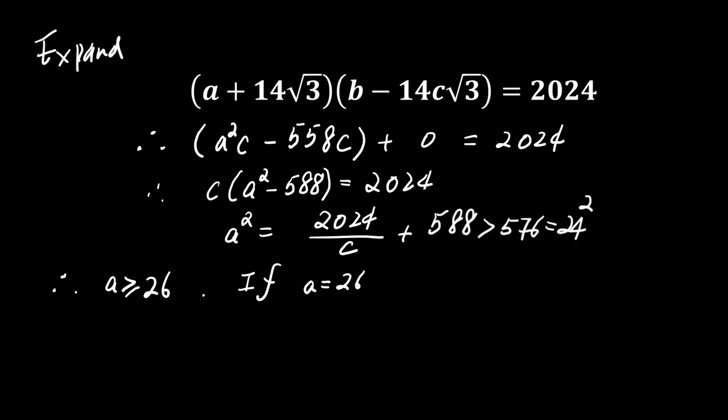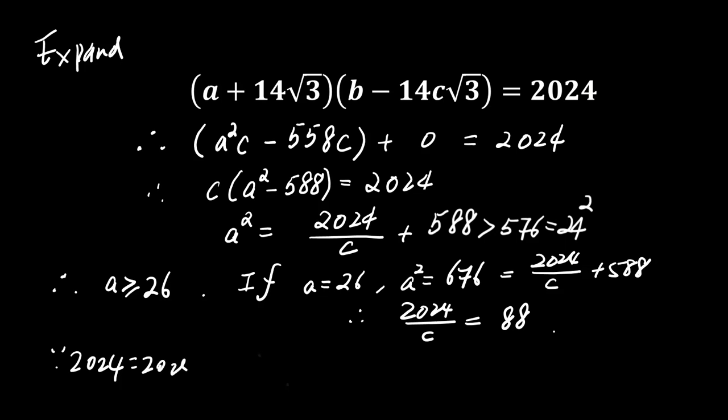Now, consider a equals 26. a squared is 676. Substituting into the equation, 676 equals 2024 divided by c plus 588. Simplifying this gives 2024 divided by c equals 88. Since 2024 equals 2 cubed times 11 times 23.